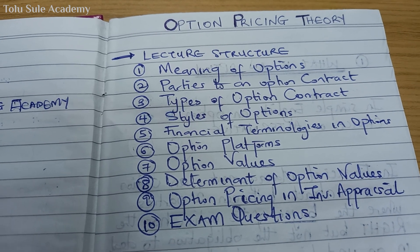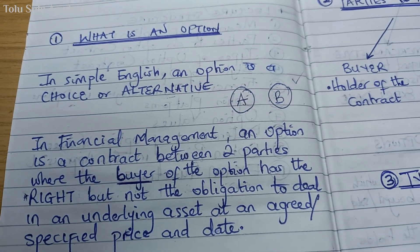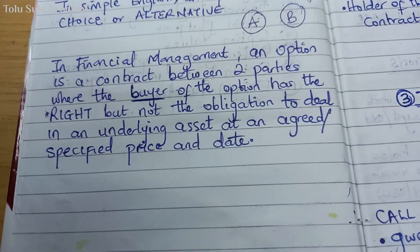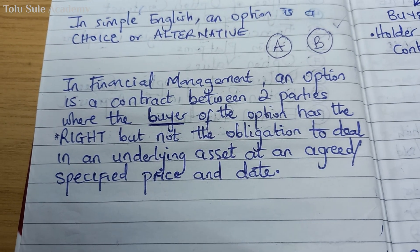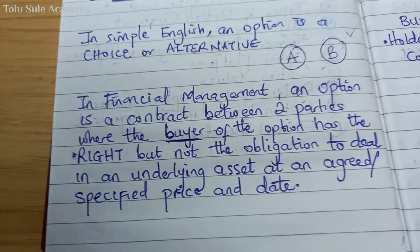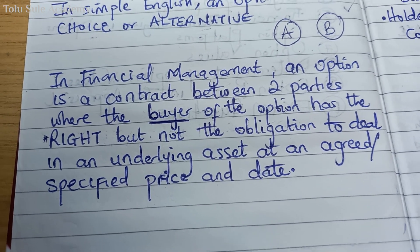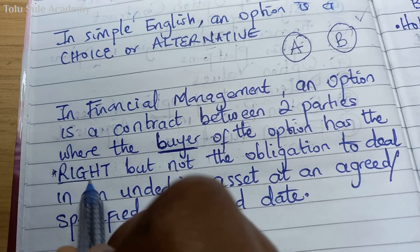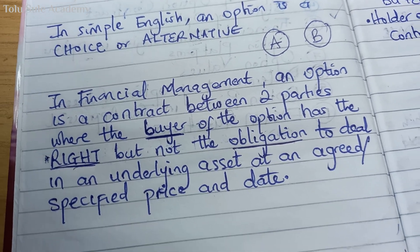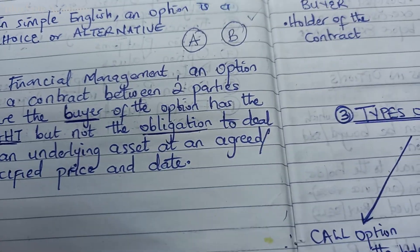Based on the lecture structure, we start from the meaning of options. In simple English, an option is a choice or alternative. In financial management, an option is a contract between two parties where the buyer of the option has the right but not the obligation to deal in an underlying asset at an agreed price and specified date.